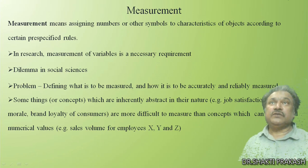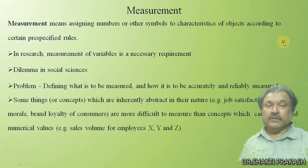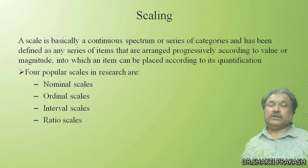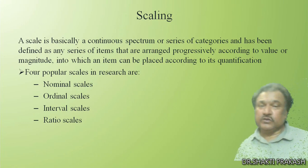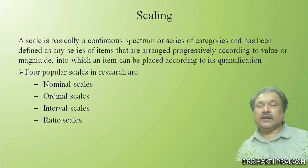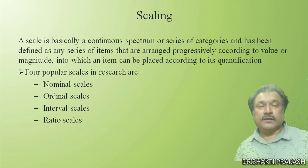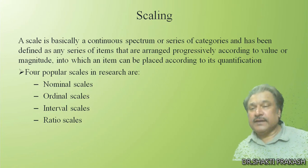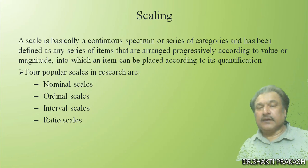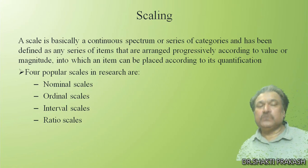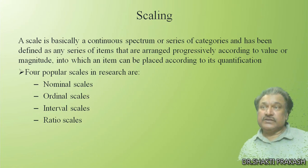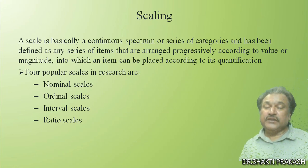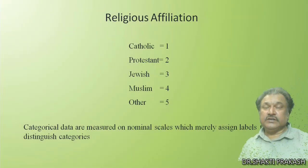There are a lot of measurement tools and scales that have been developed, and on the basis of those particular tools and scales we will discuss in detail. Having discussed measurement, we are now going to discuss scaling. A scale is basically a continuous spectrum or series of categories — any series of items arranged progressively according to value or magnitude into which an item can be placed according to its qualification. The four popular scales in research are: nominal, ordinal, interval, and ratio.